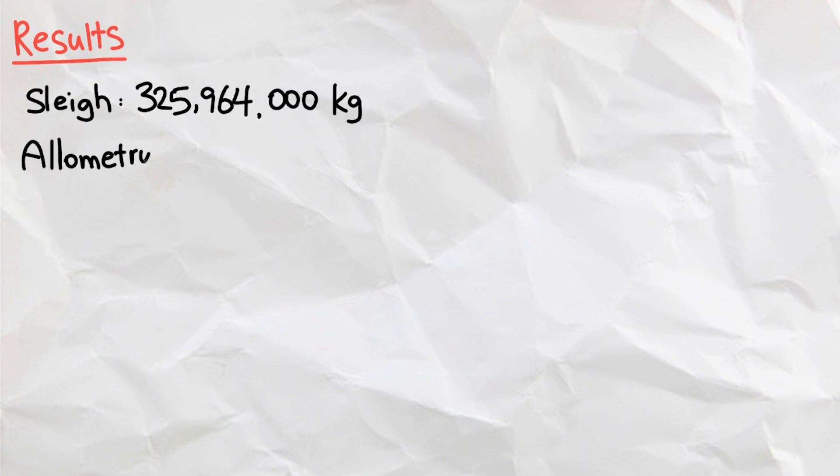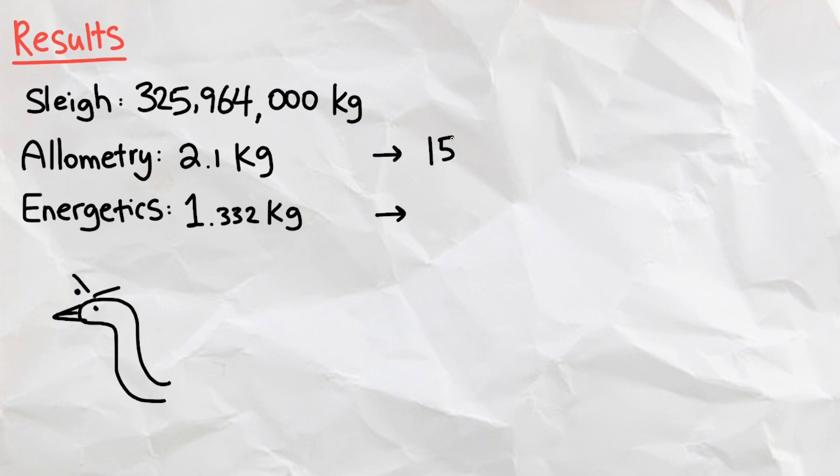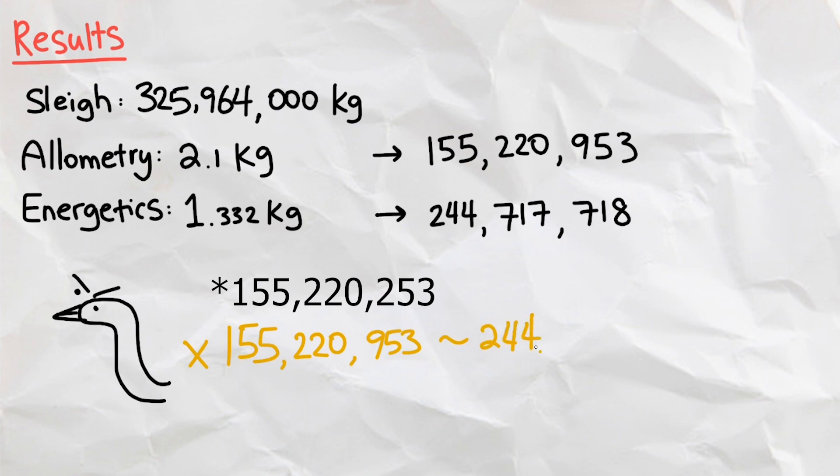Now, the final and easiest step is to divide the weight of the sleigh and presents by the carrying capacity of the Canada goose from the two models. We see that the number of geese it takes and the answer to this video's question is between 155,220,253 and 244,717,718 geese.